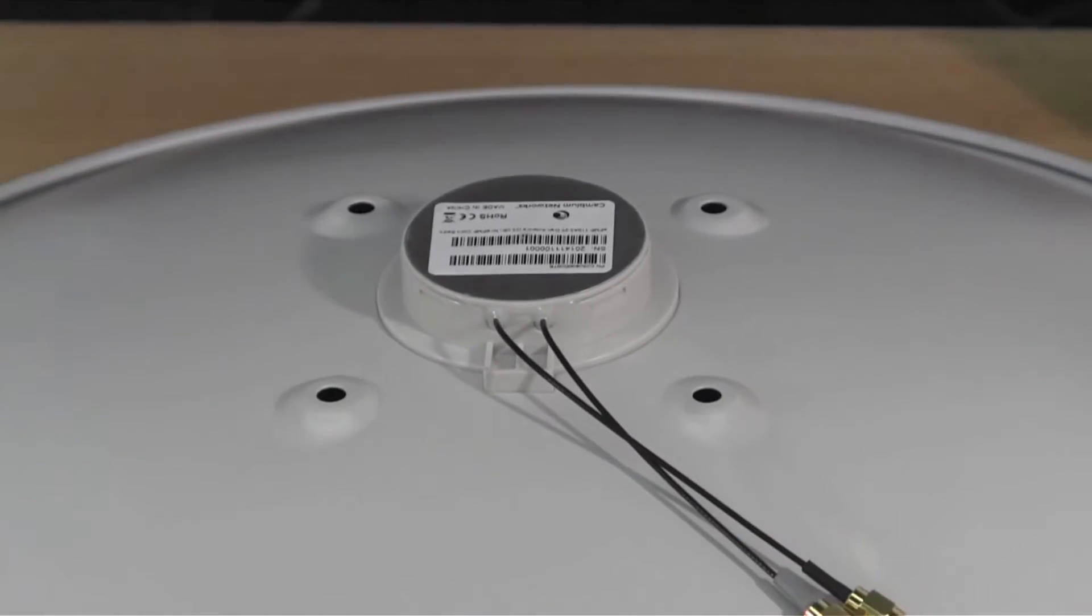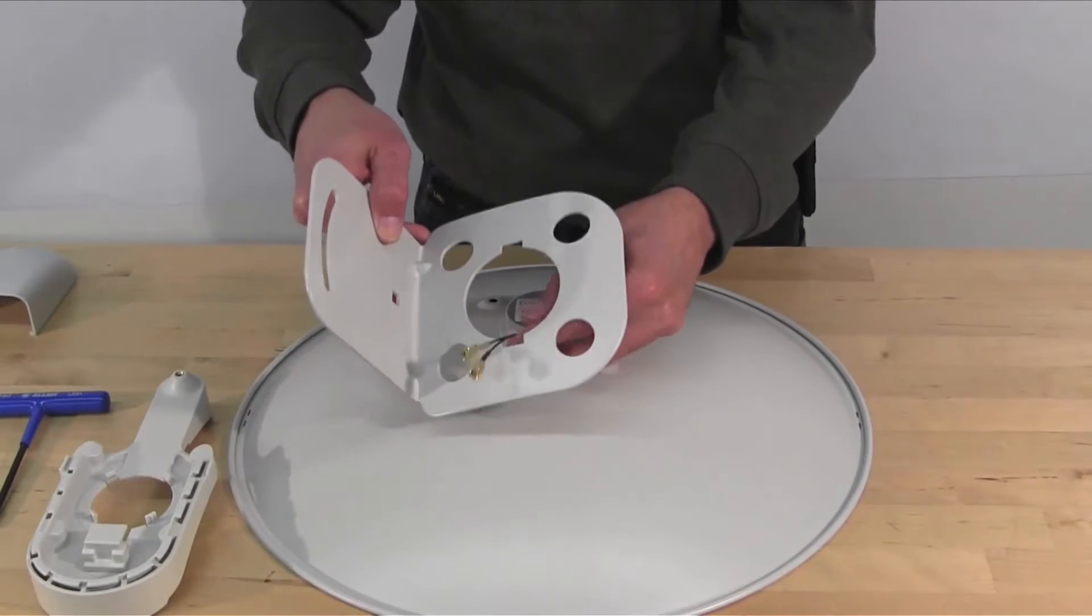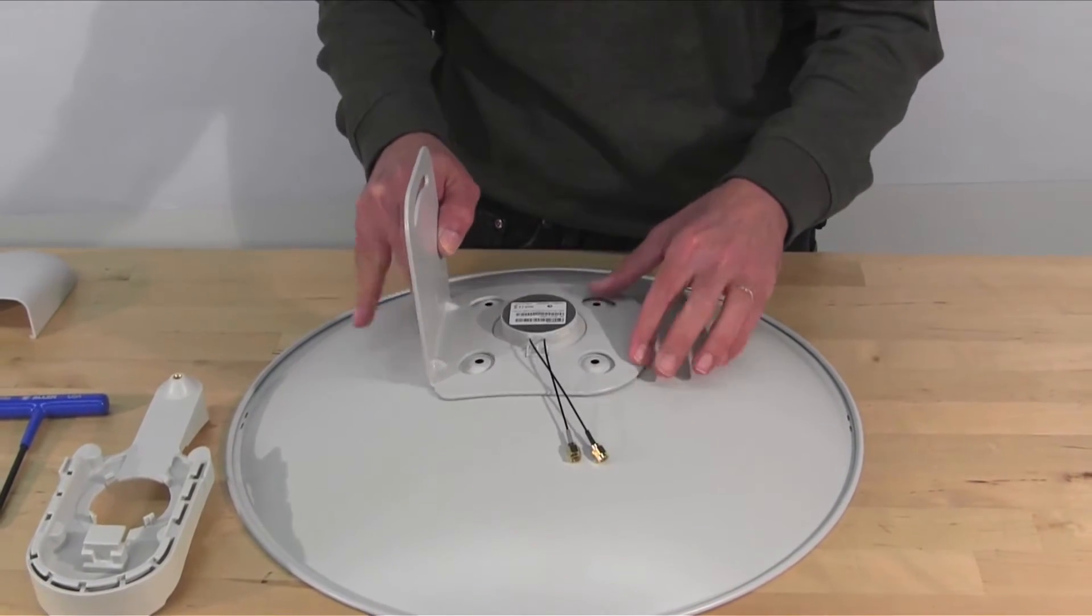Mount the bracket either on the left or right side depending on the location of the installation pole. Ensure that the cables are once again free and routed through the mounting bracket.